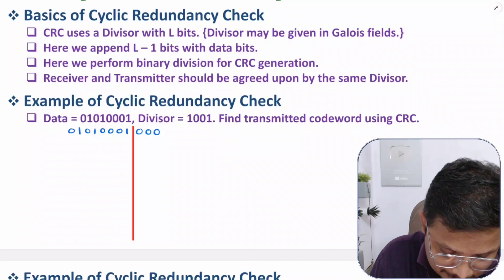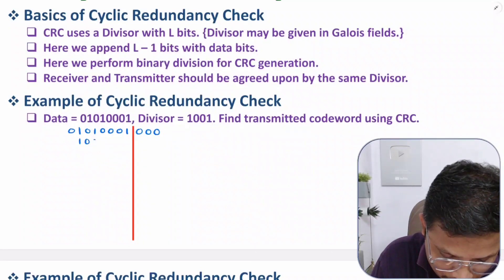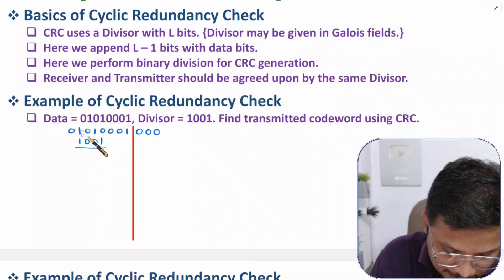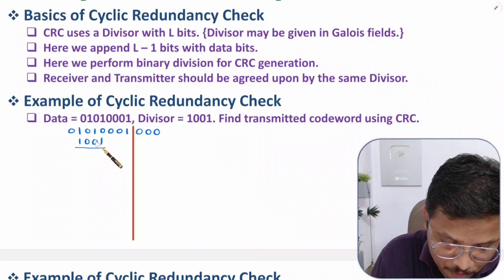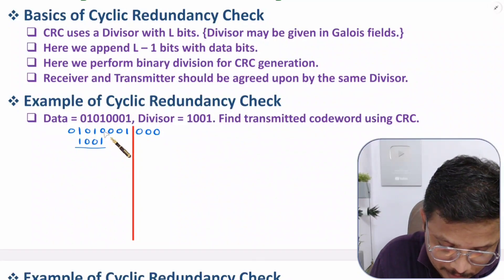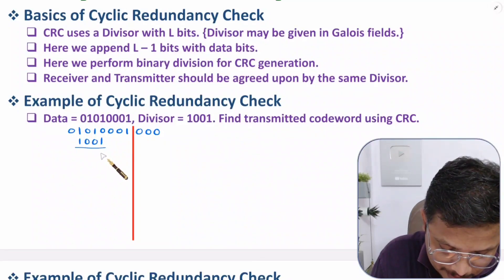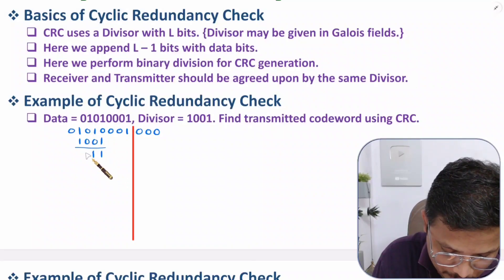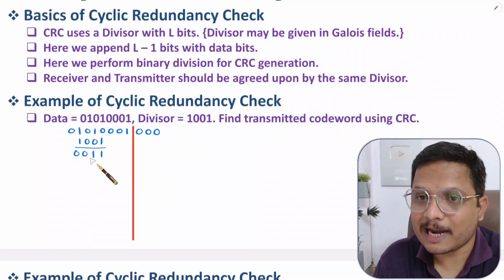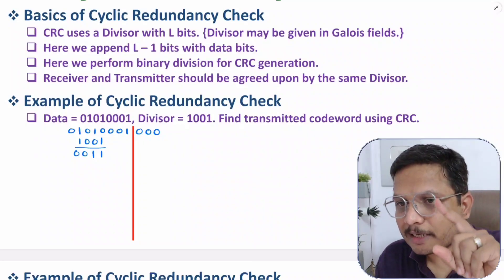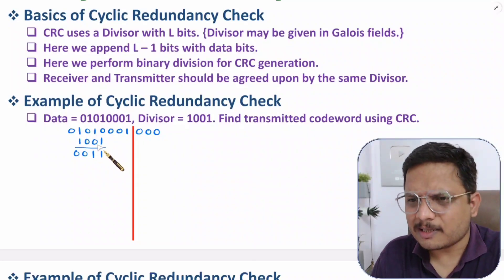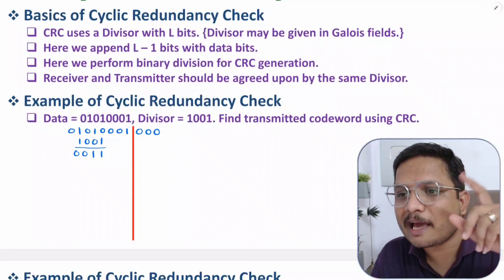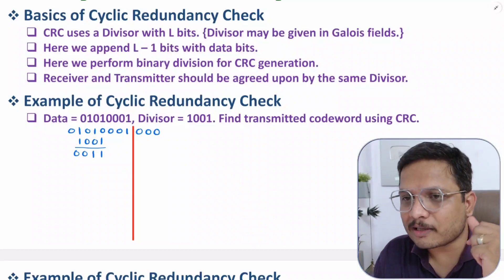The divisor is 1 0 0 1. Now divide: 1 0 0 0 1. In Galois field you just XOR — you don't carry. For example: 0 XOR 1 is 1, 1 XOR 0 is 1, and so on. This subtraction is simply XOR; you don't need to take carry. Just do the XOR operation.